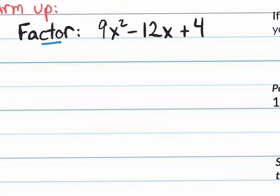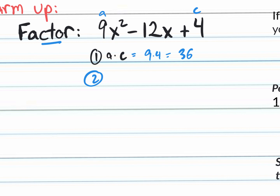Step 1: multiply a times c. A is 9, c is 4, so you have 9 times 4 which is 36. Step 2 is to make a list — a multiplication list of the answer from step 1, which is 36.